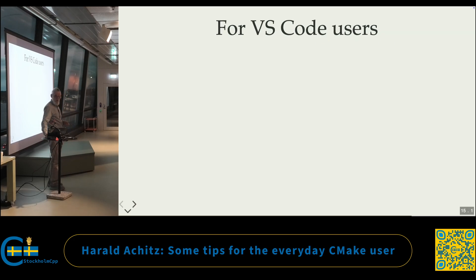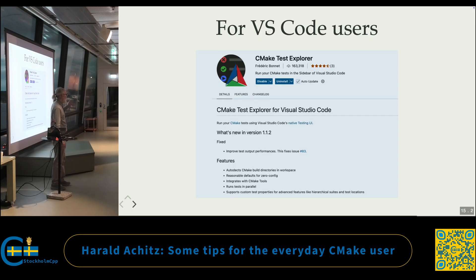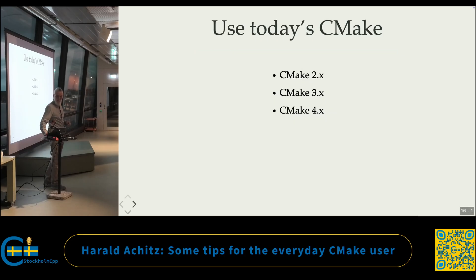For Visual Studio Code users, there is an awesome plugin — the CMake Test Explorer — that puts all your CMake tests in the test explorer. You can select a test and say 'run this test,' or you can even start to debug that test. It's just great, really convenient and comfortable. So if you use Visual Studio Code, go get this plugin.